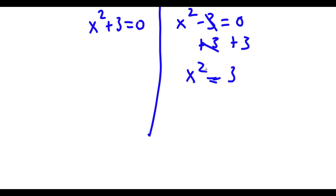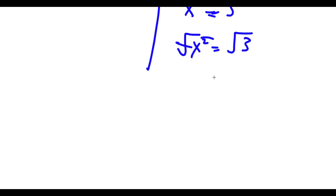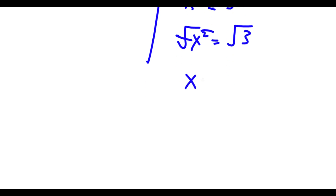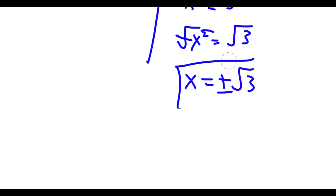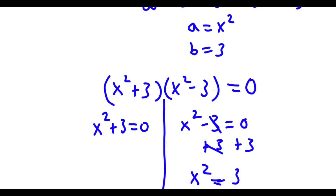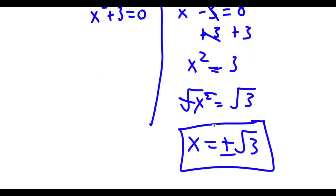Now I have x squared is equal to 3. I want to get rid of this square, so I'm going to take the square root on both sides. These two cancel out and I'm left with x is equal to plus or minus the square root of 3, because it can either be positive or negative. So this gives two solutions of x.